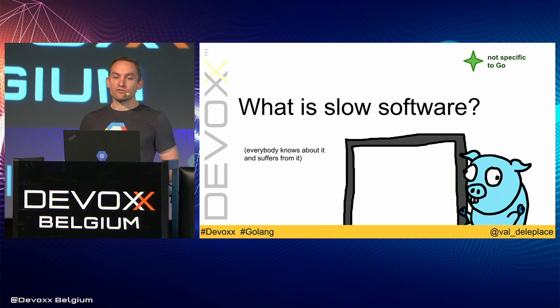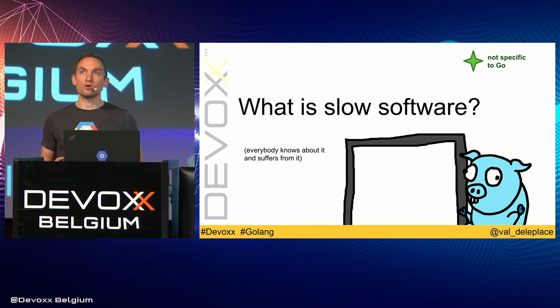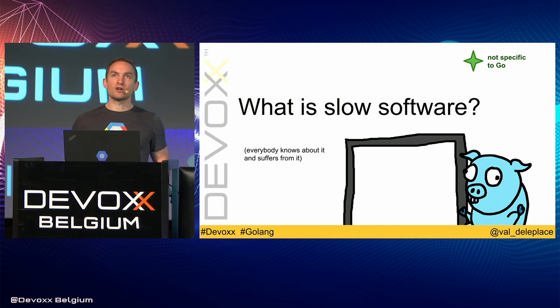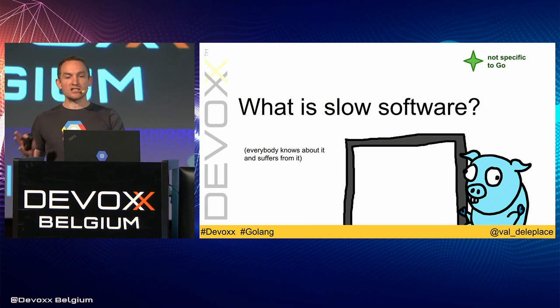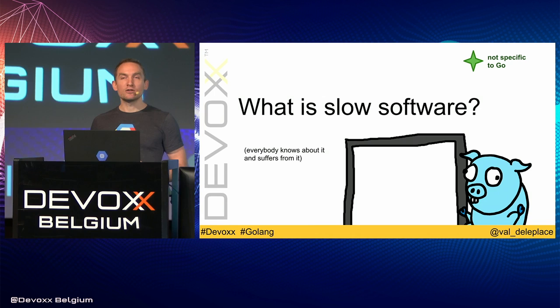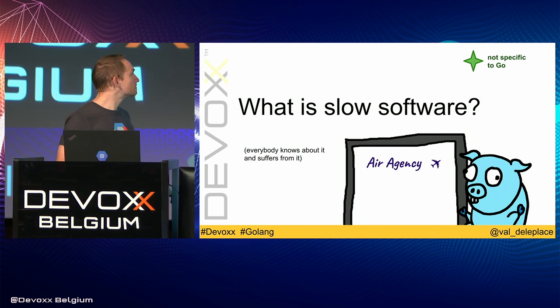What is slow software? I think everybody kind of knows what a slow application is — a slow website, or the sluggish user interface of a vending machine. Let's take this pig as an example of a user experiencing a slow website. He's bought a flight with an air agency to come to Belgium and now he's visiting the agency website to check the current status of his flight.